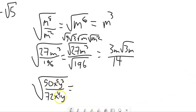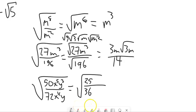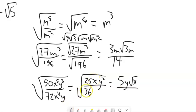Last one: square root of (50 x to the 5th y cubed) over (72 x to the 4th y). I'll reduce the fraction first. 50 and 72 are both divisible by 2, giving 25 over 36. X to the 5th over x to the 4th leaves x in the numerator. Y cubed over y leaves y squared in the numerator. Now: square root of 25 is 5; square root of y squared is y; square root of x stays as root x; square root of 36 is 6. So the answer is 5y root x over 6. Give the practice questions a try and post any questions in the forum.